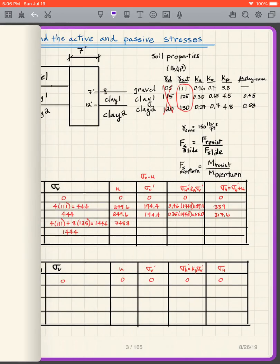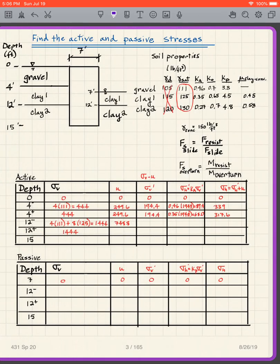So let's just get going. So this particular problem is to find the active and passive stresses for the wall shown. You can see it's a gravity wall here and we have gravel, clay 1, clay 2, clay 1, clay 2 over here. We have the water table up there on that side, water table there on that side.